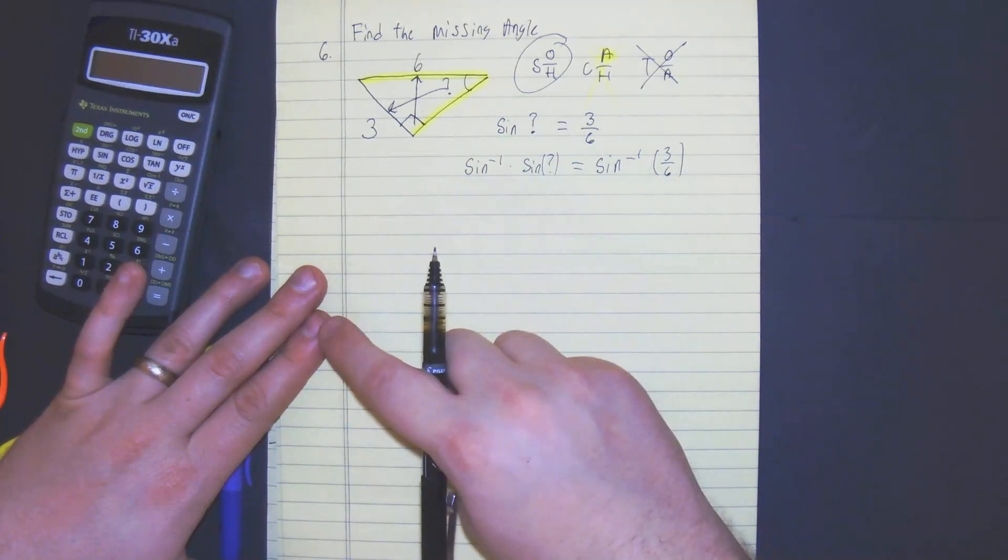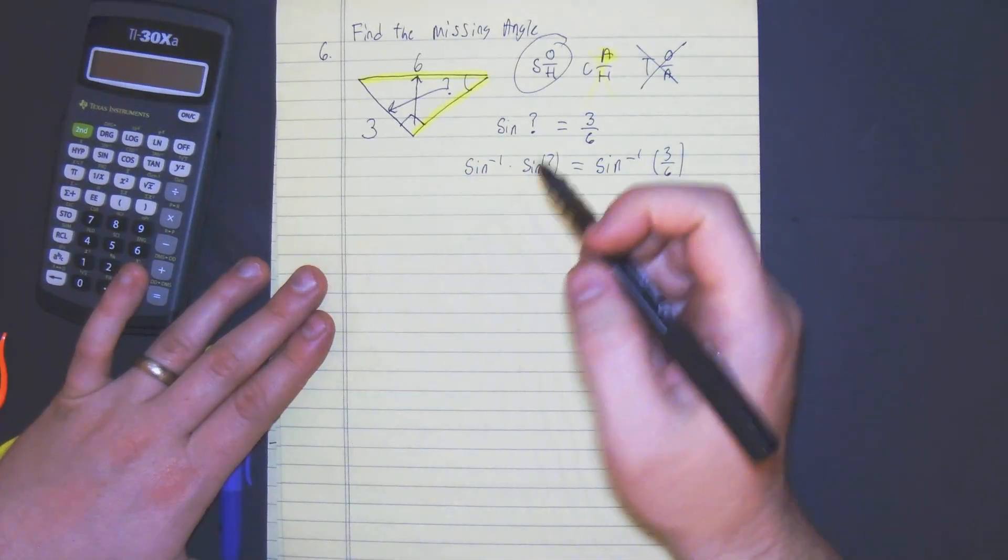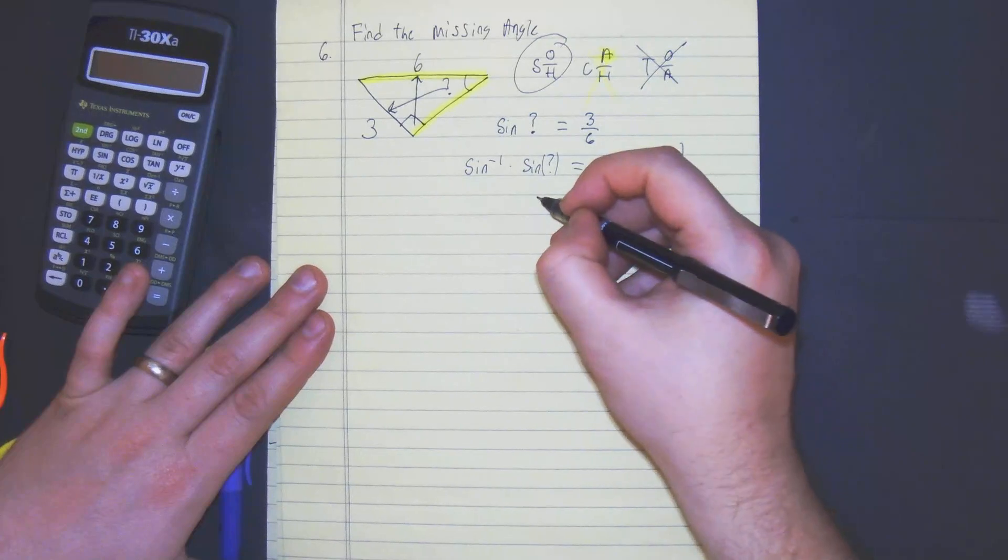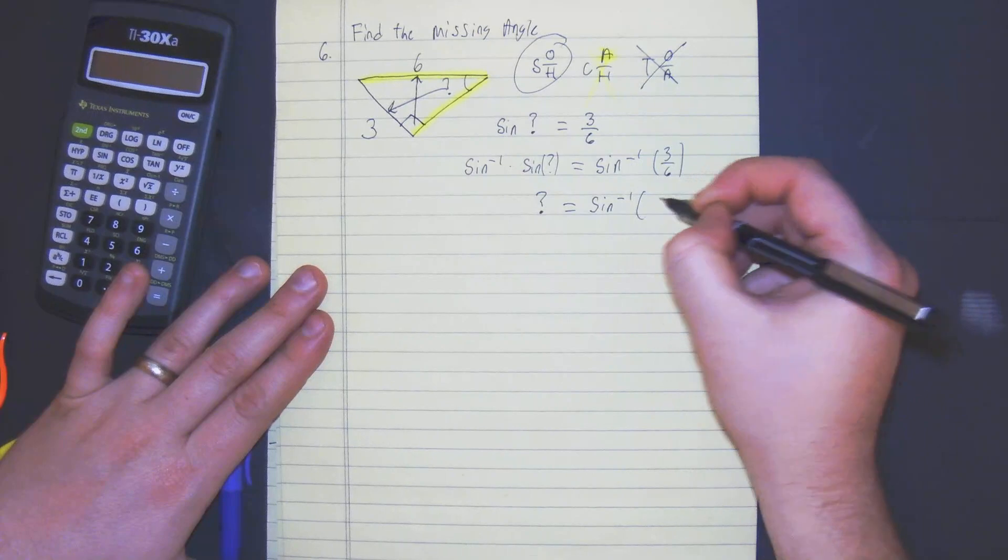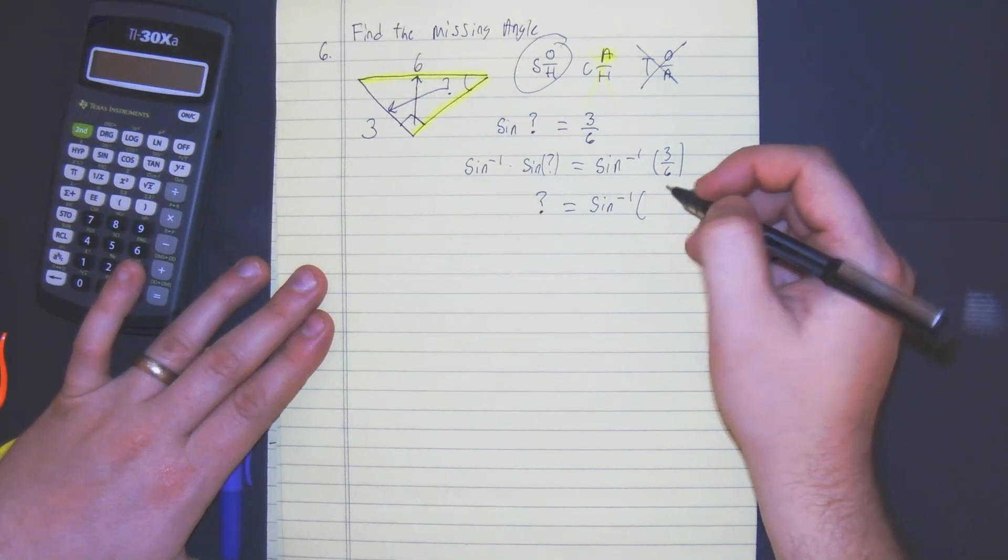These two are inverses of each other so they cancel. So we're left with the question mark is equal to the sine of negative one, three-sixths or one-half.